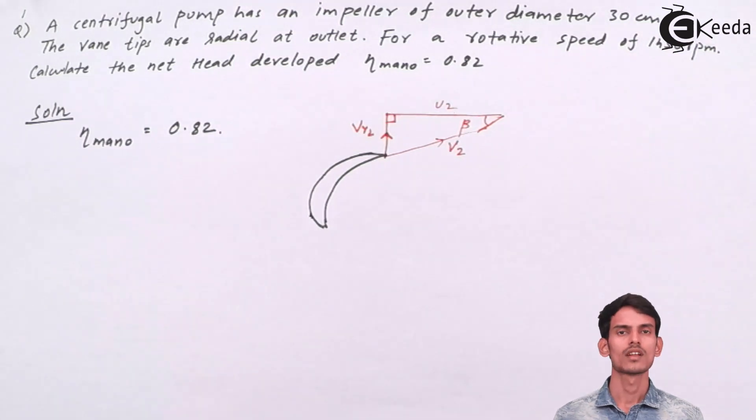So here is the outlet triangle. It looks something like this. Since it is radial, I've already said you need to draw it perpendicular. So here is the outlet triangle.